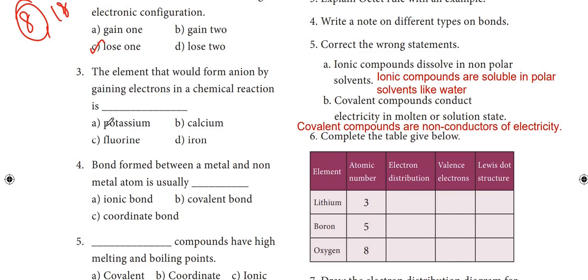Third question: the element that would form an ion by gaining electrons in a chemical reaction is fluorine. Fourth question: the bond formed between a metal and non-metal atom is usually an ionic bond.